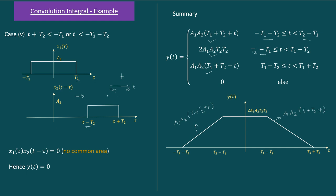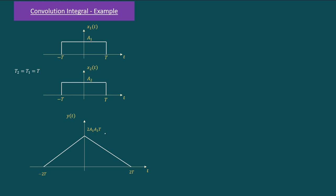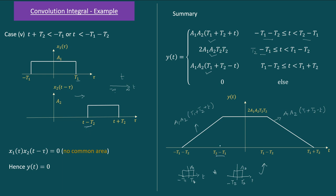If we convolve two rectangular signals of different widths — one from −t1 to t1 with amplitude a1, and another from −t2 to t2 with amplitude a2 — we obtain a trapezoidal function. As an extension, if t1 and t2 are equal, the flat top of the trapezoid collapses to zero width, and we obtain a triangular function instead.